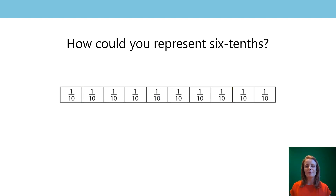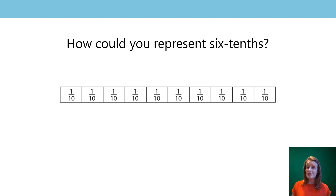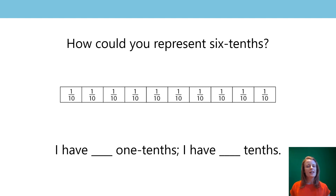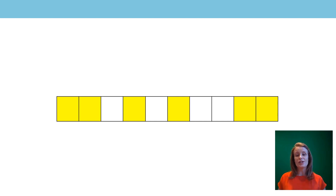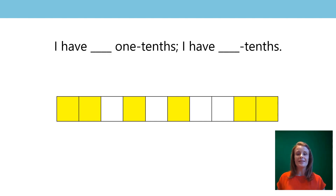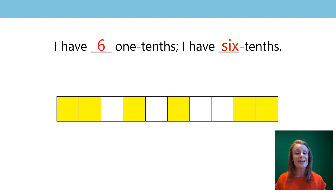Now it's your turn. How could you represent six tenths? Can you have a go at copying my bar and shading six tenths? Pause the video. Did you manage it? Here's my stem sentence to check — did you count six one tenths and therefore six tenths? Let's see my example. Here's one way of showing it: I have six one tenths, I have six tenths. And again, it doesn't matter where you've shaded them — which six tenths you've shaded — as long as you've only shaded six out of ten equal parts. Well done.